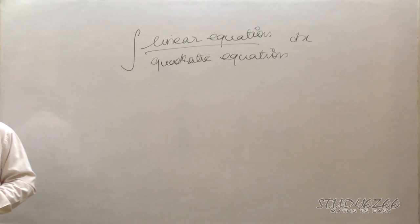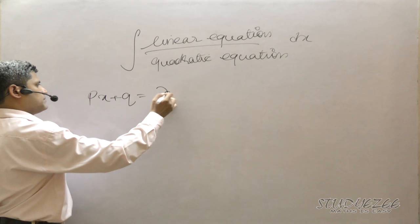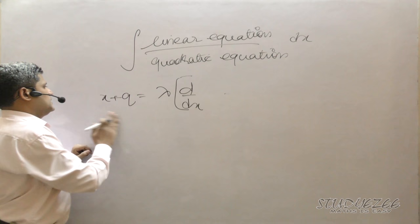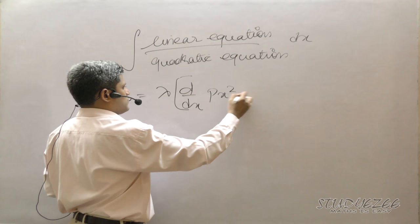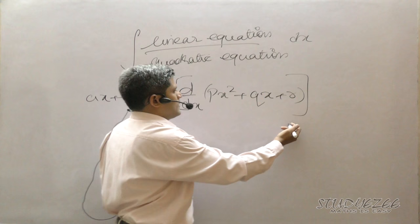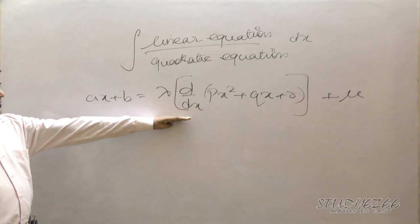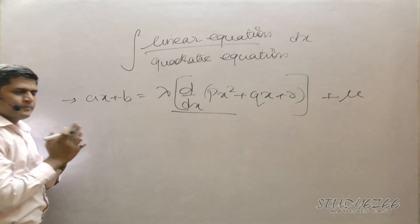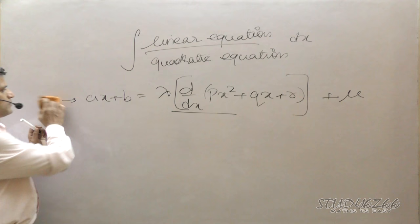So we write: ax + b = λ · d/dx(px² + qx + r) + μ. This is the standard form. We will then split the linear equation into two parts and solve them separately. How we solve it will be clearer with an example.